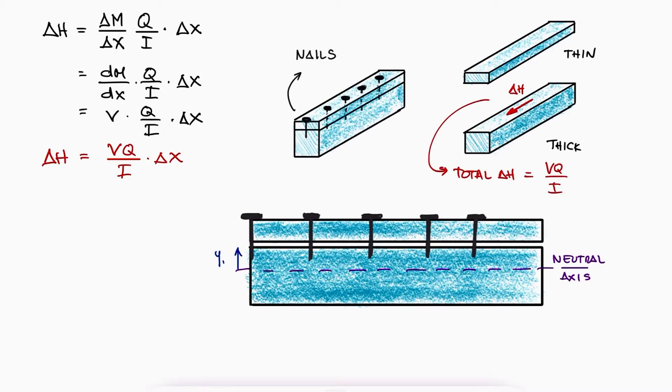For the total force, delta x could be the length of the entire beam, and then each nail would be subjected to a fraction of delta H. Since delta H is the total force that all the nails are carrying, each nail would be subjected to delta H over the number of nails. However, this whole process is inefficient.